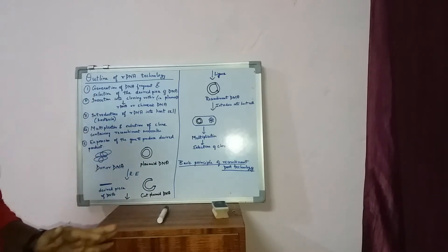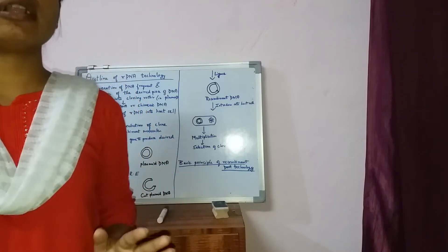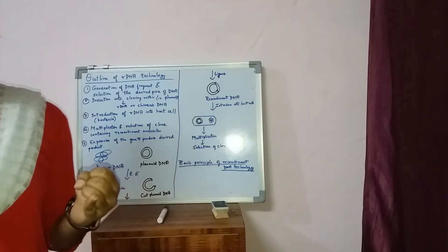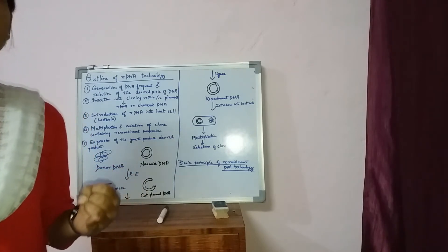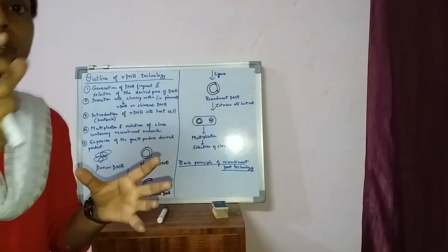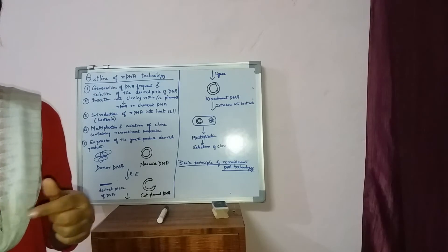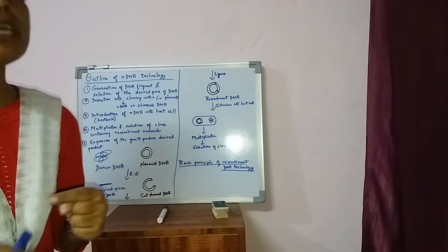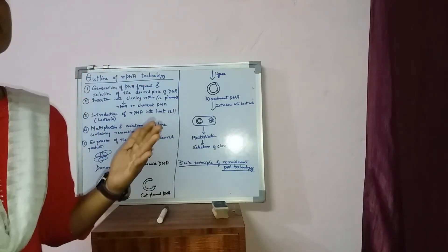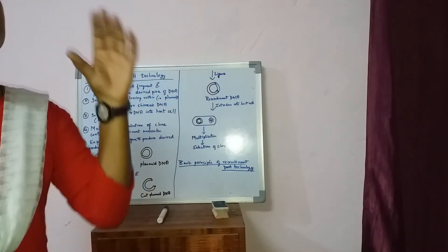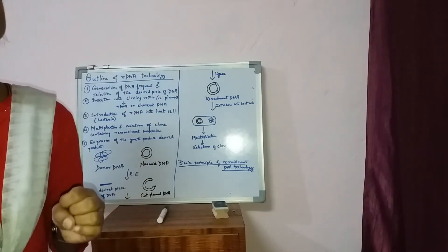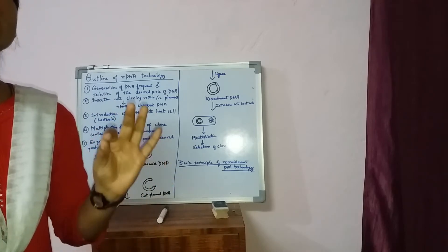The third step will be the introduction of recombinant DNA into the host cell. The first step is generating the DNA fragment, which is the desired piece of interest. The same restriction enzyme is used to cut open the plasmid DNA. Then we introduce that particular DNA fragment of interest into the plasmid. The resulting DNA is known as recombinant DNA or chimeric DNA.